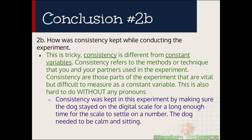How is consistency kept while conducting the experiment? Now this one's always the tricky one for kids because consistency is different from constant variables. It's referring to the methods or the technique that you and your partners use in the experiment. And this is actually really hard to do without a pronoun either because you're referring to yourself and what you did but you still can't use a pronoun. Because remember in all lab reports you can't have a pronoun anywhere. Let's take a look at what I wrote here. Consistency was kept in the experiment by making sure the dog stayed on the digital scale for a long enough time for the scale to settle on a number. The dog needed to be calm and sitting. So no pronouns there. And also that is something that you probably didn't mention too well in your procedure but it really helped out get the numbers that you wanted to get for good results.